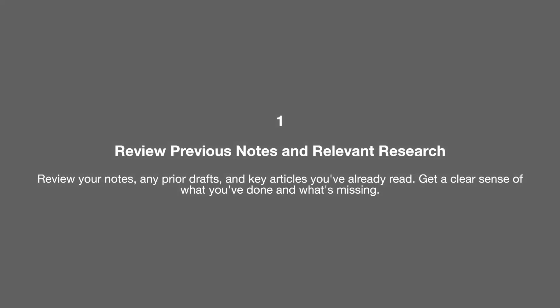The first thing you want to do is review your previous notes and relevant research. Look at any notes, other drafts you might have had, and any key articles you've already read, to get a clear sense of what you have done and what is missing. When writing a research paper, there has to be unique, new information not yet provided in the literature. Identify gaps that still exist that you can discuss in your paper.